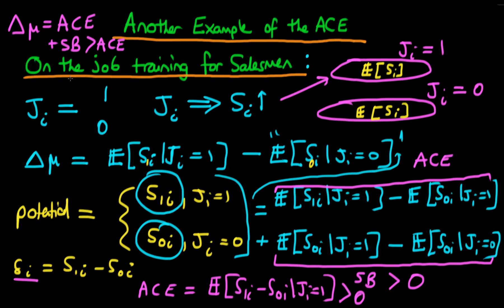Much like before, if we could assume random assignment of on-the-job training, that would remove the selection bias effect. Under random assignment, S0i and S1i are independent of Ji, so we can replace the expected value of S0i given Ji equals zero with the expected value of S0i given Ji equals one. Now the first expression in the second line and the second expression in the bottom line are the same, so the selection bias effect disappears. This is the case under random assignment of Ji.